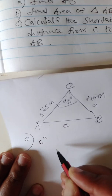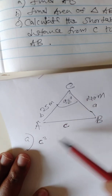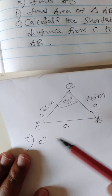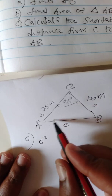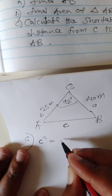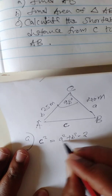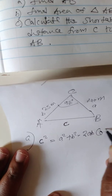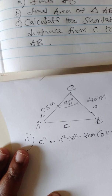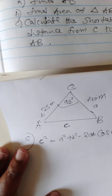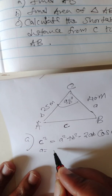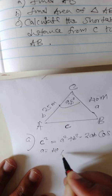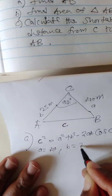So say c squared. You need to know which formula to use — in this case, because we have two sides producing an angle, we use the cosine rule. So c squared equals a squared plus b squared minus 2ab times cos C. In this case our a is 40 and our b is 25.